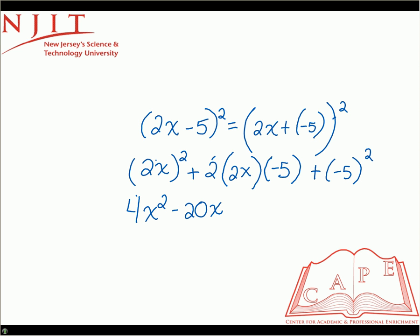And then finally, we have plus and then the (-5) squared. And of course, whenever you take a negative number, square it, because the negative is in the parentheses, that's very important. Because the negative is in the parentheses, that negative has to also be squared.